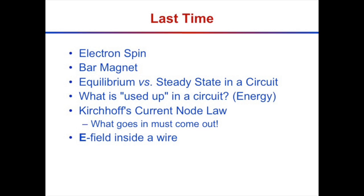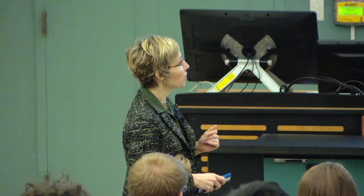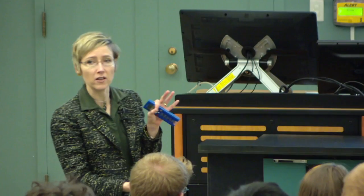We talked about what's used up in a circuit. We saw that it's not that the little circuit elements are eating electrons. What's getting used up is energy — energy is being converted from chemical energy of a battery into heat or light or whatever the output of your circuit is.